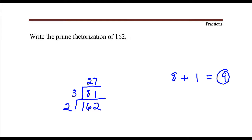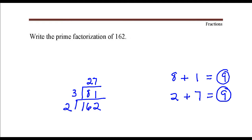27 is also divisible by 3. You can check that — take the two digits that make up 27, the 2 and the 7, and add those together. I get another 9. Since that number is divisible by 3, then so is 27. So 27 divided by 3 is 9, and 9 is also divisible by 3.